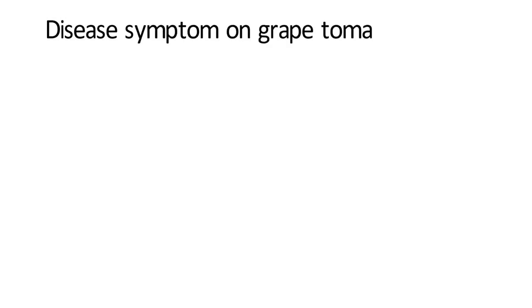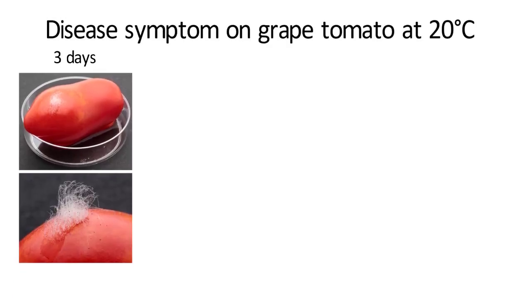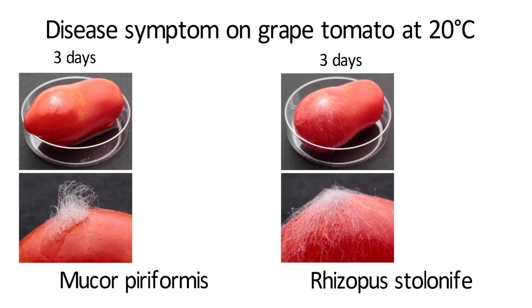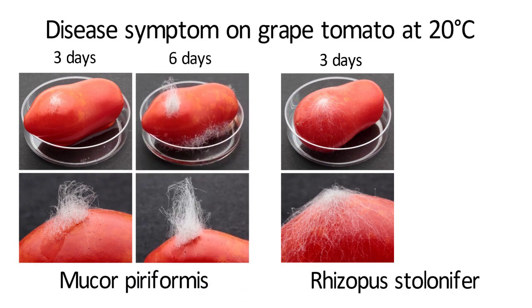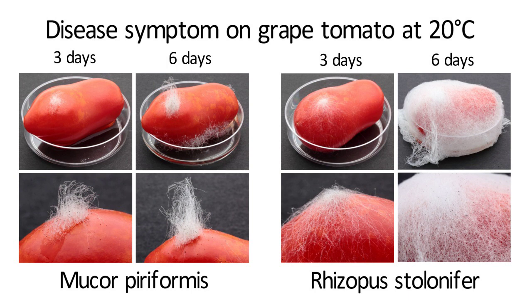Now let's take a look at disease symptom on grape tomato. On the third day, Mucor piliformis formed sporangiophores that erect straight, while mycelia of Rhizopus stolonifer started to creep on the surface of the fruits. On the sixth day, sporangiophores of Mucor piliformis grew even higher, and new sporangiophores started to develop from the bottom of the fruits. For Rhizopus stolonifer, the fruits were completely covered by mycelia, with woven mycelia making it look like a bird's nest.